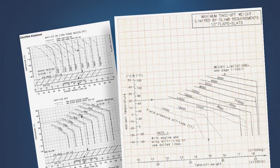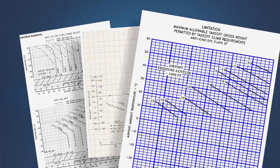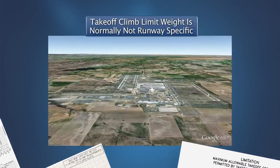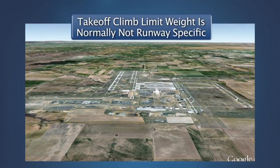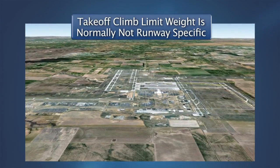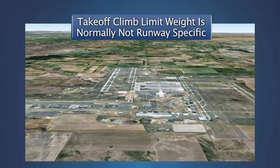Increasing flap settings used for a takeoff reduces the runway length required in most cases. However, it also decreases the takeoff weight limit at which these minimum gradients can be achieved. Depending on the runway choice available for takeoff, this interrelationship effectively means that the climb limit weight may be runway specific. These climb gradient requirements are intended to provide a minimum acceptable level of one-engine inoperative climb performance, but are definitely not intended to satisfy obstacle clearance requirements. Obstacle clearance must be considered separately.